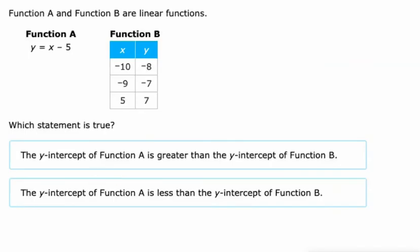Now we're being asked about Y-intercepts. On function A, that's the Y-intercept right there. Negative 5. B, it's a little bit tougher. We're not given the value of Y when X is 0. So I guess we're going to have to figure it out.